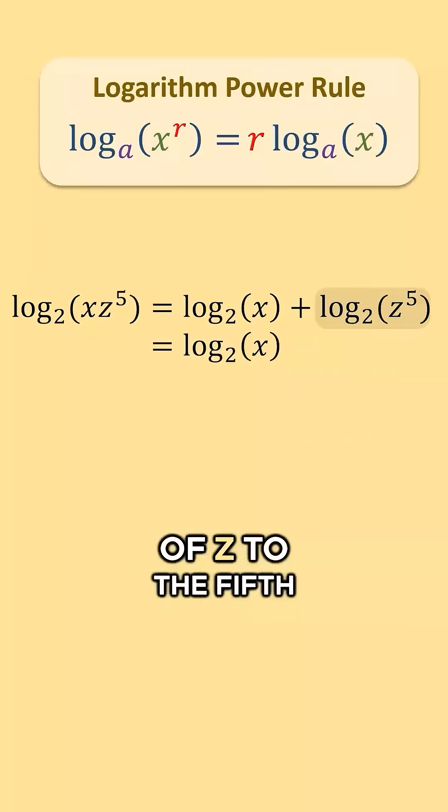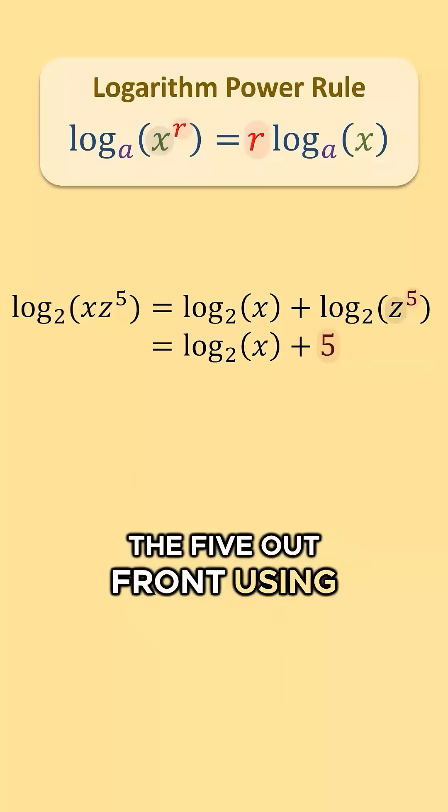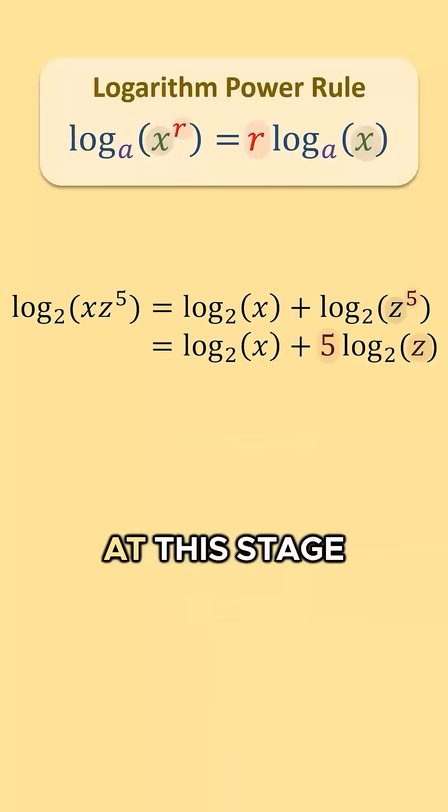Looking at log base 2 of z to the fifth power, I see everything within our logarithm is raised to the fifth power. So I can bring the 5 out front using the logarithmic power rule and keep everything as is on the inside.